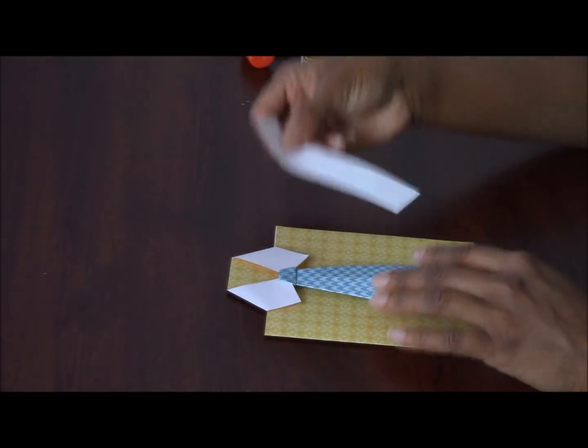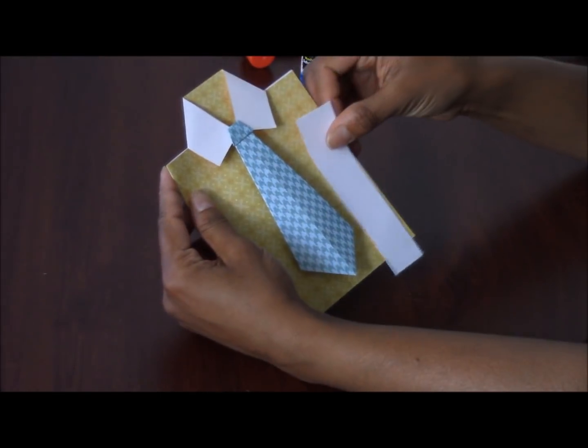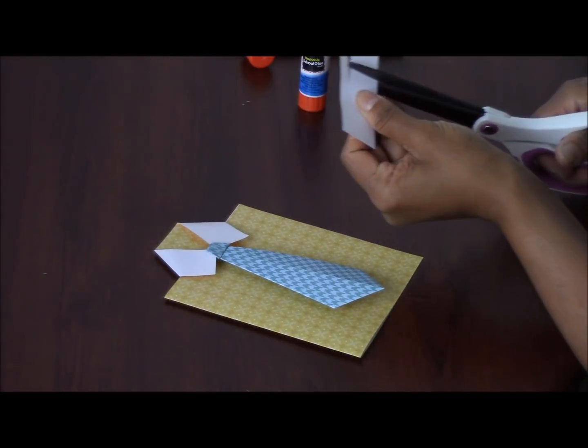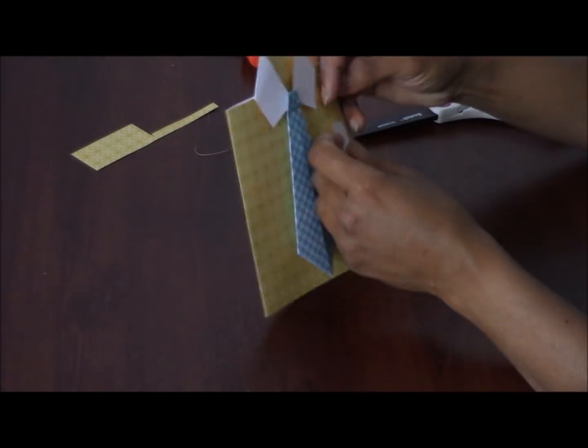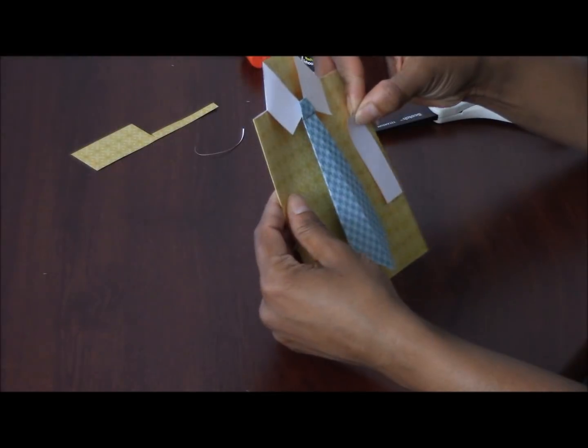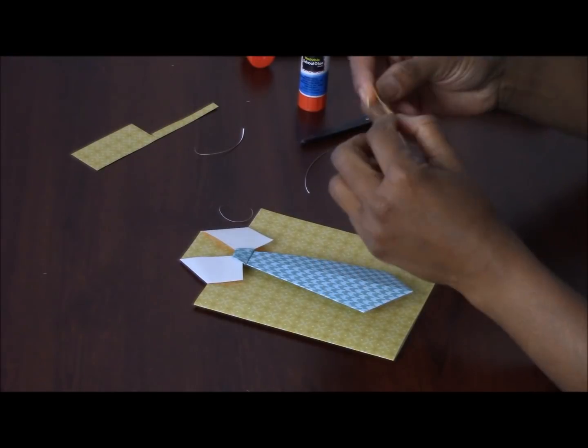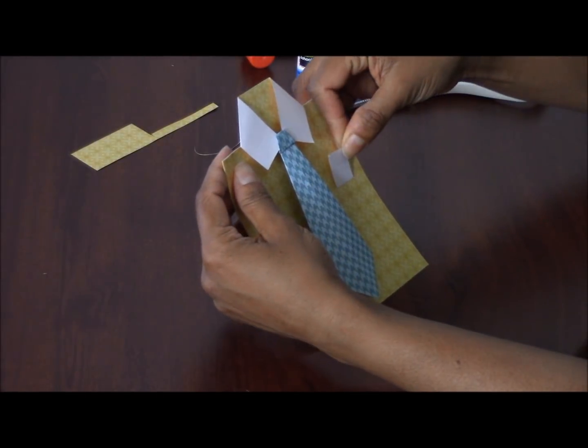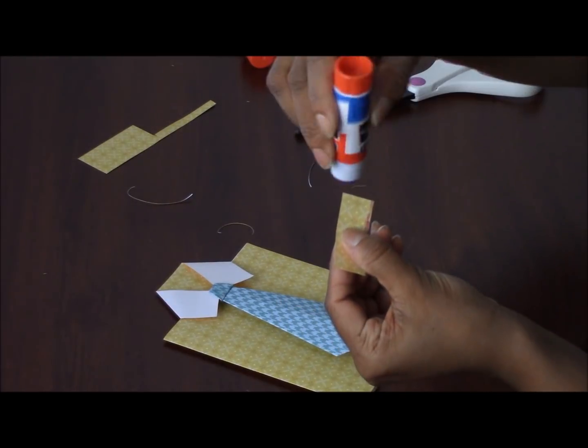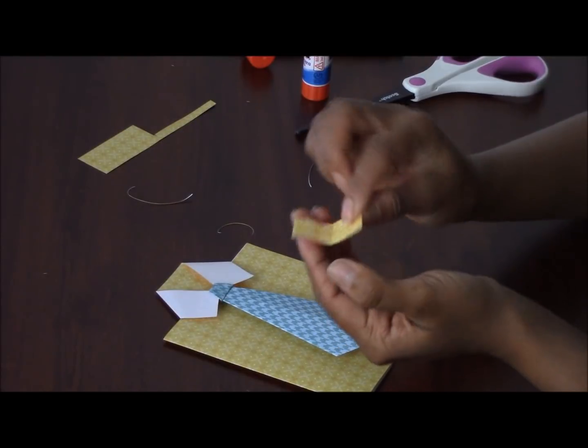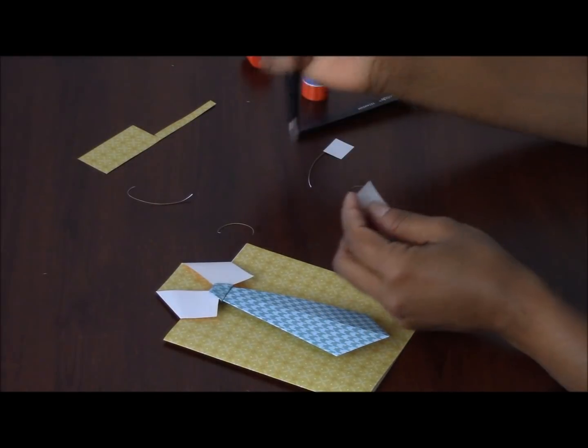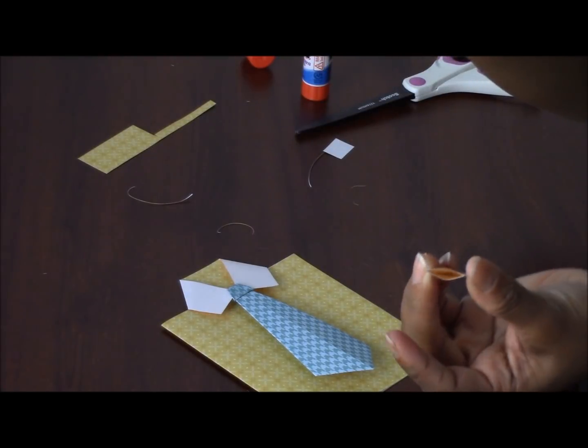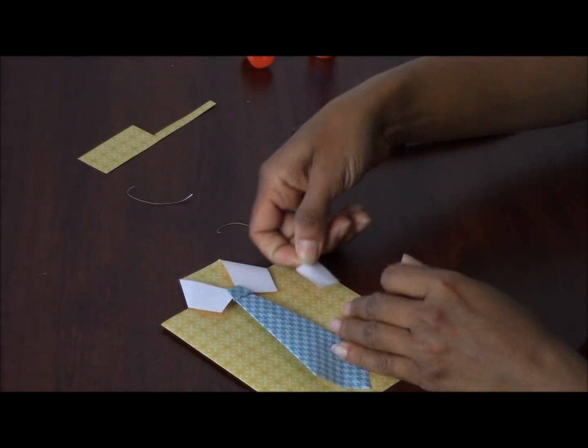The strip reserved from before can be used as a shirt pocket. Cut the strip to make a decent size pocket, neither too big for the shirt nor too small. Glue the edges, leaving one side open. Glue the pocket onto the shirt.